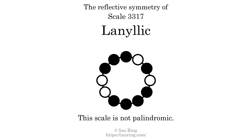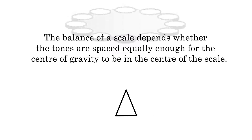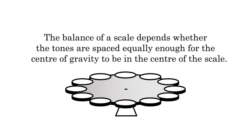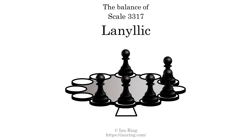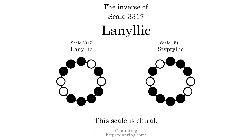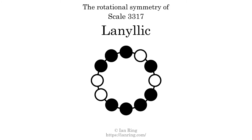This scale has no reflective symmetry. This scale has a different pattern of intervals ascending and descending, so it is not palindromic. This scale has no ridge tones. The balance of a scale depends on whether the tones are spaced equally enough for the center of gravity to be in the center of the scale. This scale is not balanced. The inverse of this scale is scale 1511, also known as Type TILIC. This scale is chiral — it cannot transform into its inverse by rotational transformation. This scale has no rotational symmetry.